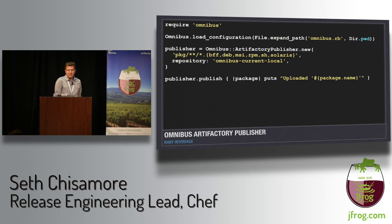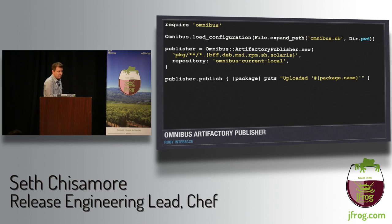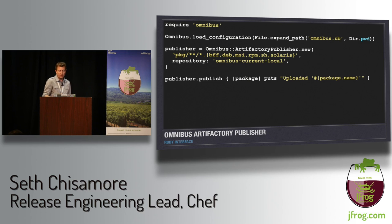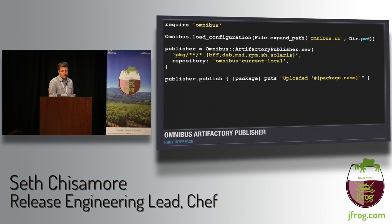You can also perform the same upload using pure Ruby, which saves an unnecessary shell-out if the calling tool is Ruby. At Chef, all our CI integrations are pure Ruby, so we just call the actual classes. Another interesting thing in the Ruby version: the publisher.publish method actually yields to a block, so you can do things like print log messages during a multi-artifact upload.